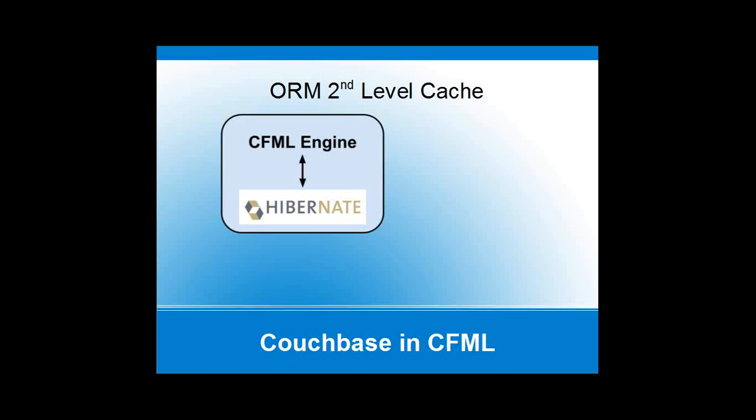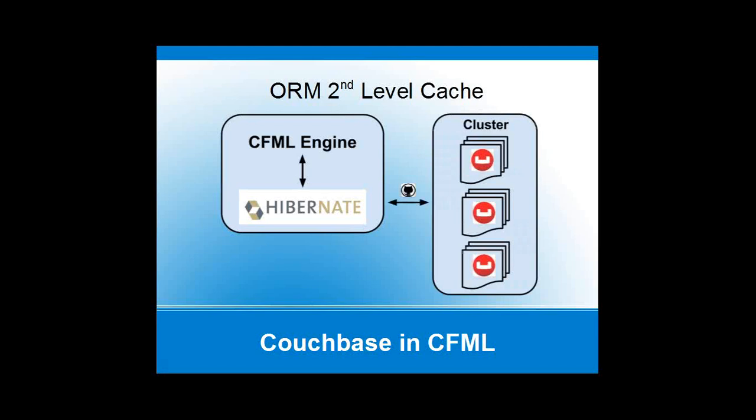Both Rilo and Adobe ColdFusion have Hibernate under the covers for ORM. There's an open source library on GitHub which is a cache provider for Hibernate — because Hibernate has a pluggable architecture for second-level caching with Memcached. The great thing about Couchbase is it can be a drop-in replacement for Memcached. It supports the same over-the-wire protocols on the same port, and the client never even knows it's not actually talking to Memcached — but you get the benefit of true horizontal scaling and disk persistence.